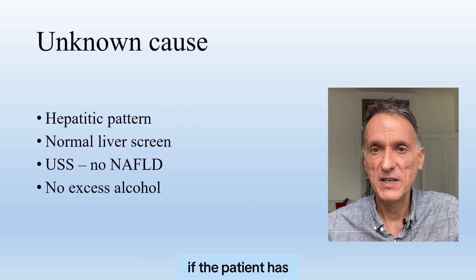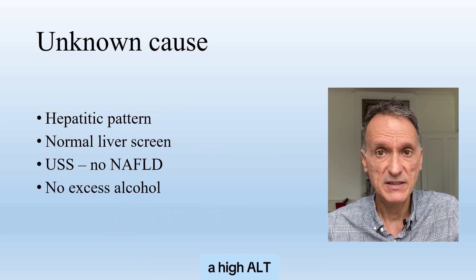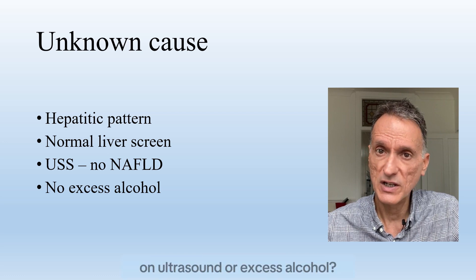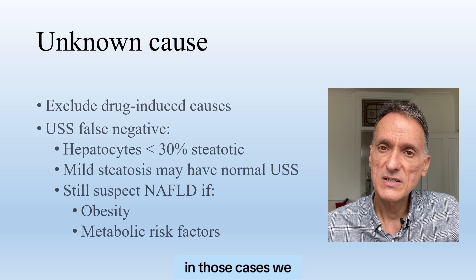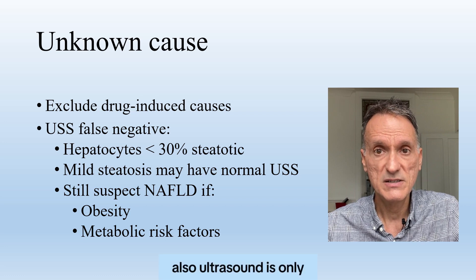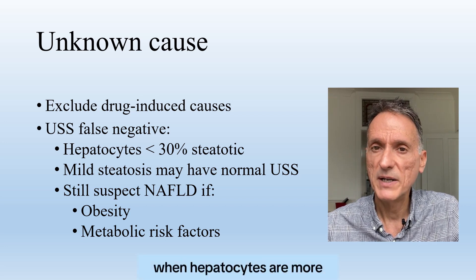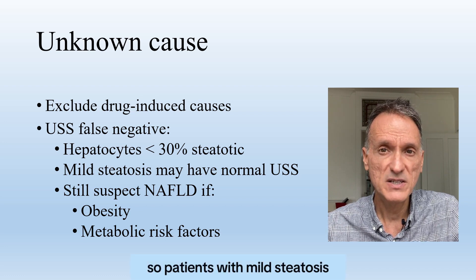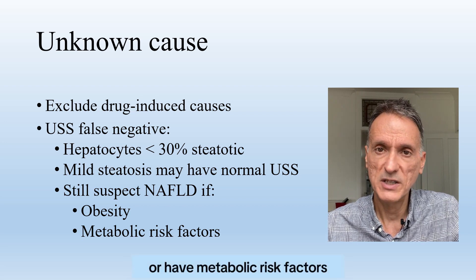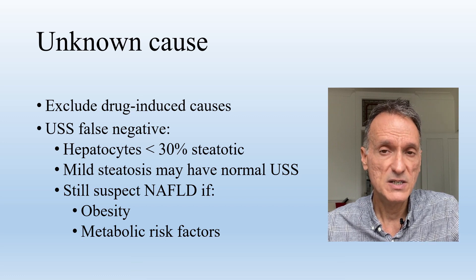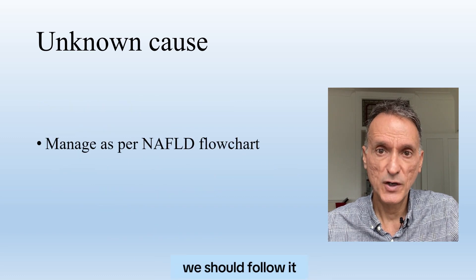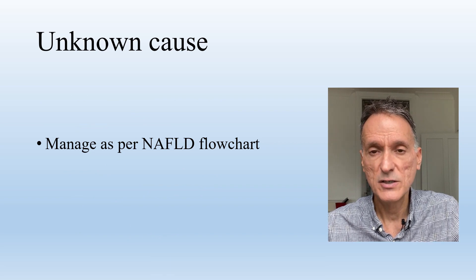But finally, what do we do if the patient has a hepatitic pattern with a high ALT and AST without an obvious cause — that is, when the liver screen is normal and there is no evidence of NAFLD on ultrasound or excess alcohol? In those cases, we will need to re-examine the history to exclude potential drug-induced causes. Also, ultrasound is only sensitive for steatosis when hepatocytes are more than 30% steatotic. So patients with milder steatosis might have a normal ultrasound. If these patients are obese or have metabolic risk factors and we suspect they may still have NAFLD despite the normal ultrasound, we should assess them in accordance with the NAFLD flowchart.